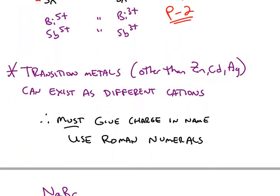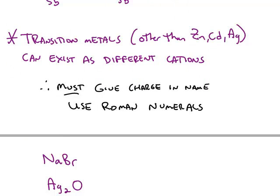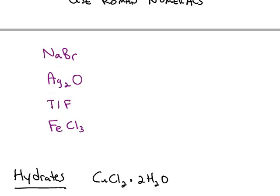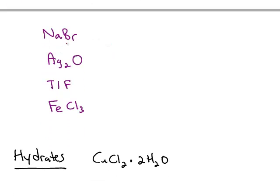Because these transition metals, other than the three that you have to memorize, exist as different cations, when you name them, you have to give the Roman numeral in the name that tells you what charge we're talking about. So here are some examples of ionic compounds. You can tell they're ionic because they're made up of cations and anions. We have the cation first, the anion second.